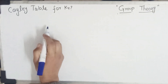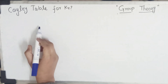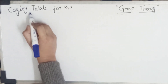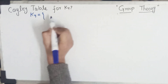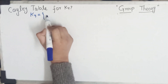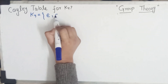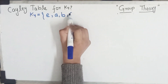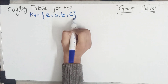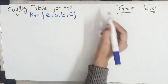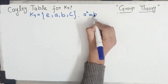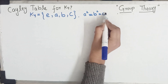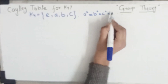Today we will discuss the Cayley table for K4. For that, we need to know about the elements of K4. K4 has 4 elements: identity, a, b, and c. a² = b² = c² = e (identity).